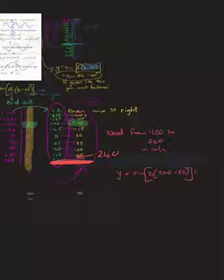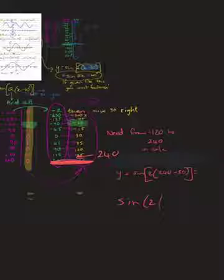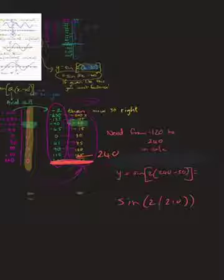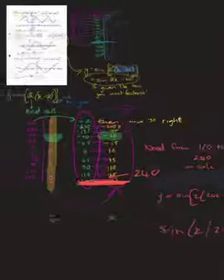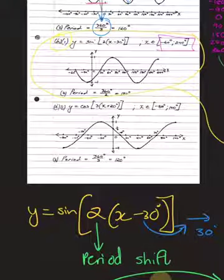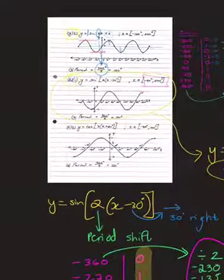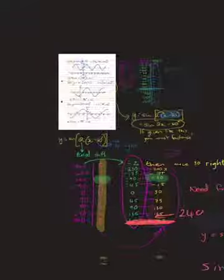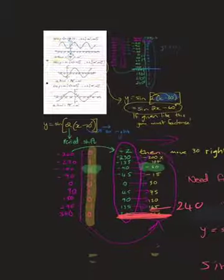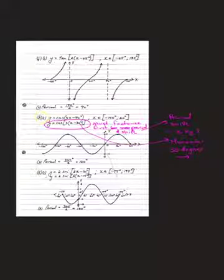In your calculator, type sin and open a bracket, open another bracket, then type 240 minus 30 (or just 210), and close two brackets. It tells you the value is root 3 over 2, approximately 0.87 — just below 1. So on the graph at x = 240, the point sits just below 1. You have both calculator and manual methods available to you.